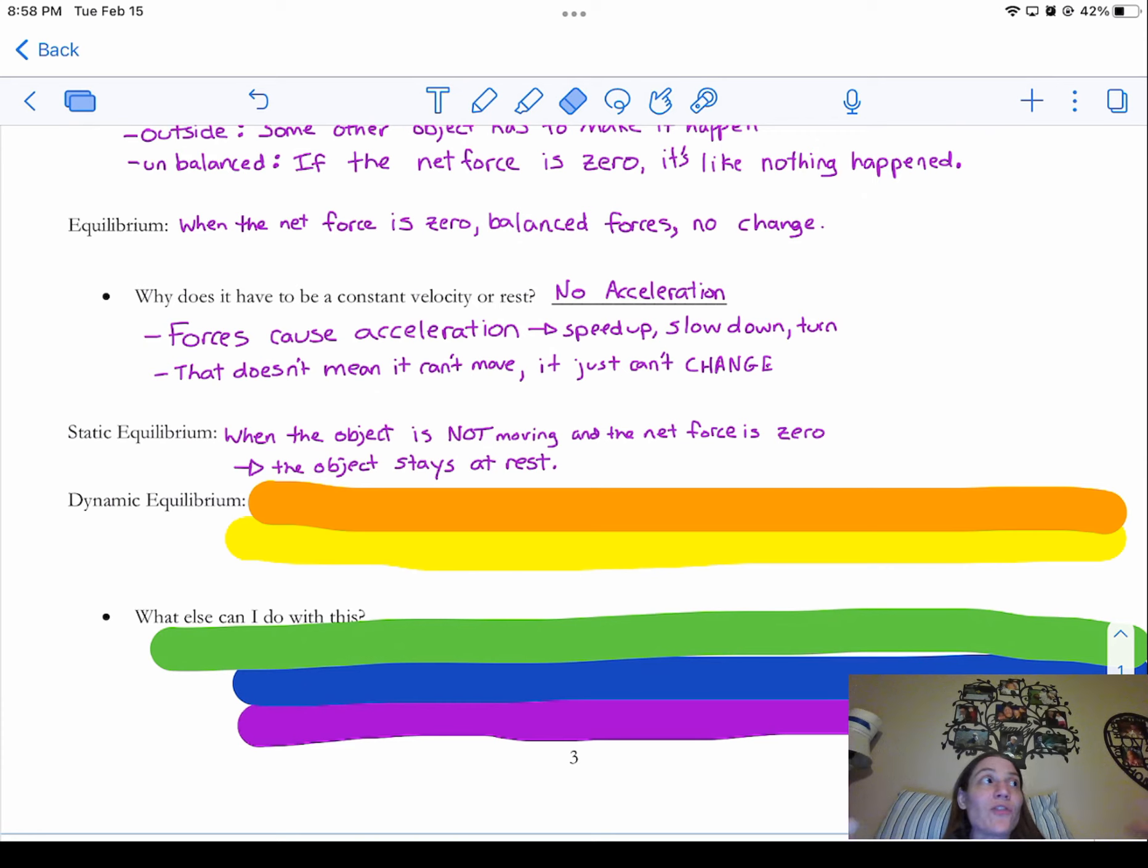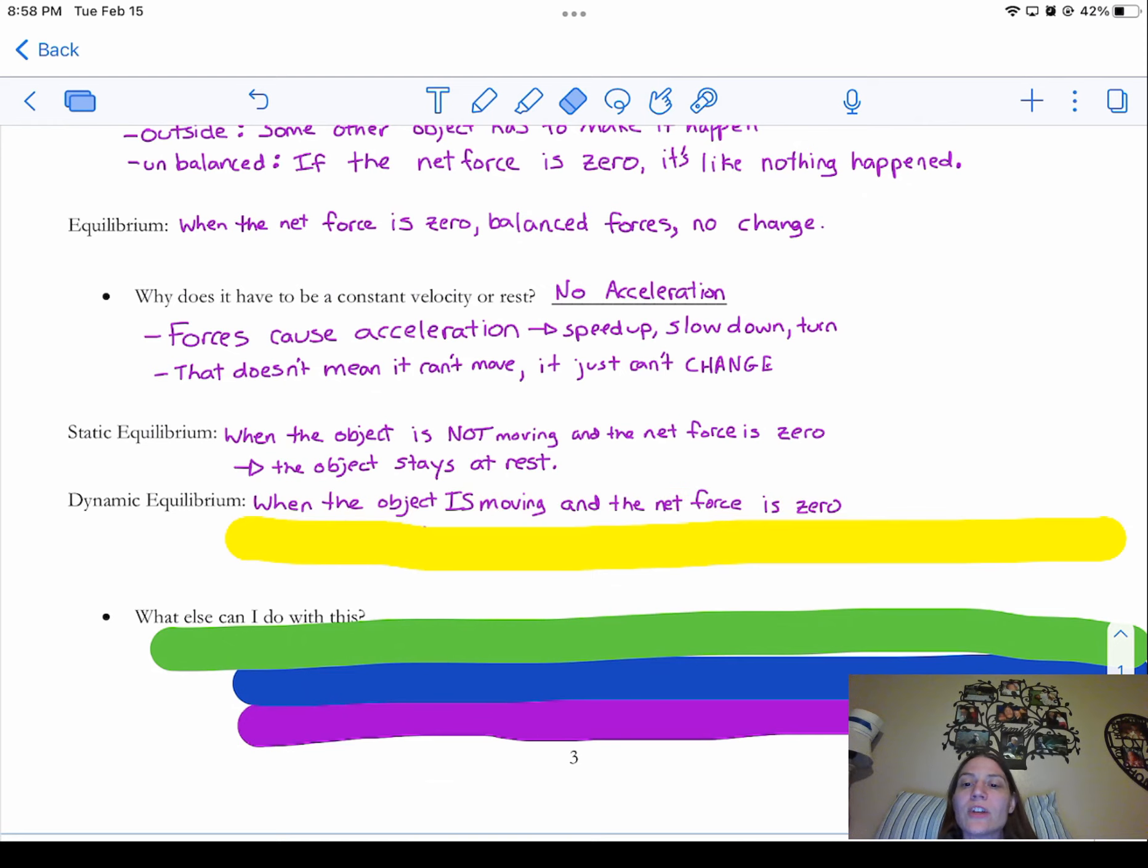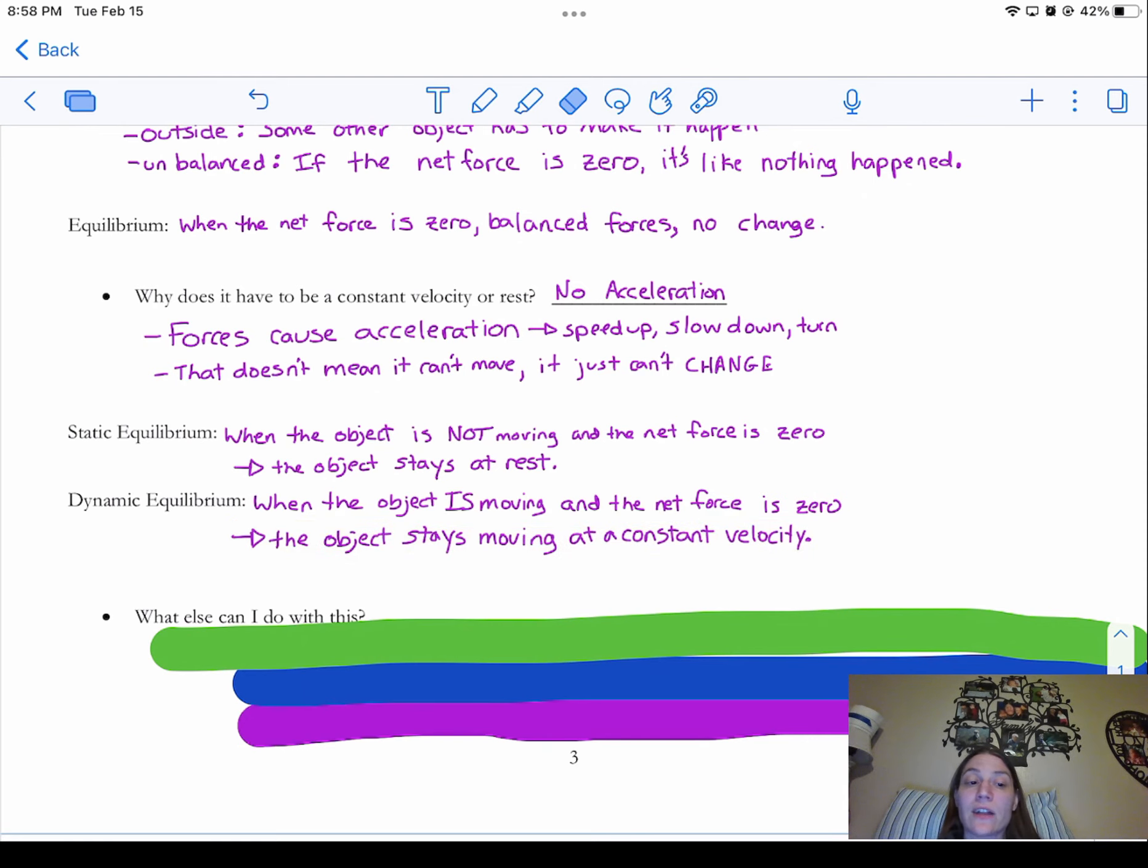Now dynamic, that's for something that is moving. If it's dynamic, it's lively, right? So it's got a lot of motion going on. So when the object is moving and the net force is zero for dynamic equilibrium, that means the object is going to stay moving at a constant velocity.